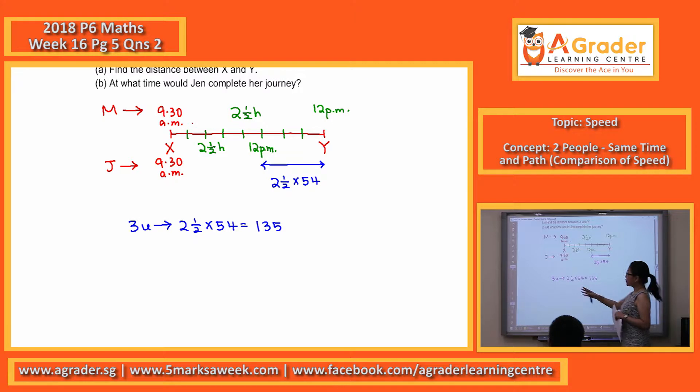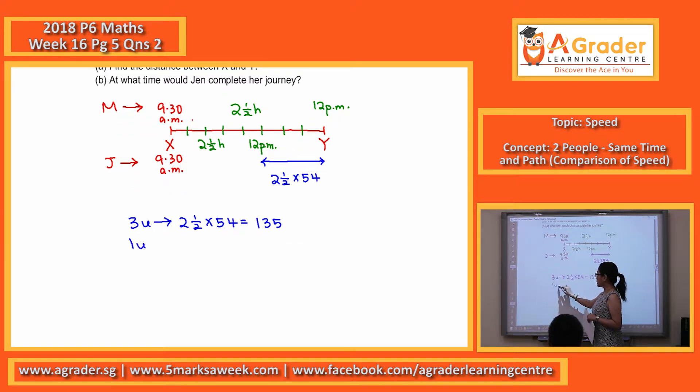So once you get 3 units, maybe you look for 1 unit first. 135 divided by 3, you get 45.